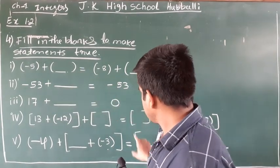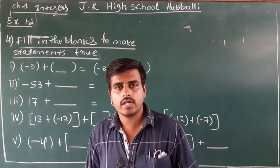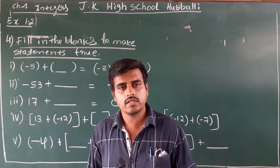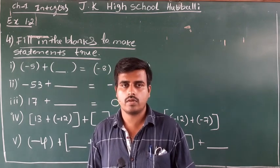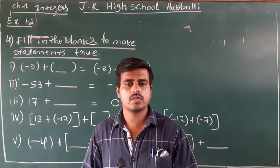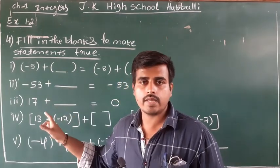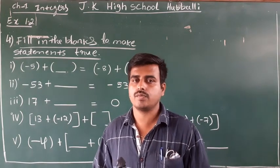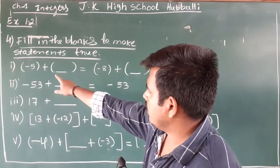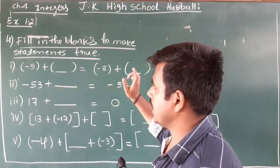They are telling all statements are true because the equal sign is used. Now you should choose an integer in such a way that the statement remains true — it should not be false. The statement is already true; you have to choose the integers to place in the blanks so that the statement remains true. We will see them one by one: minus five plus blank equals minus eight plus blank.